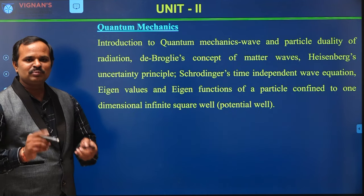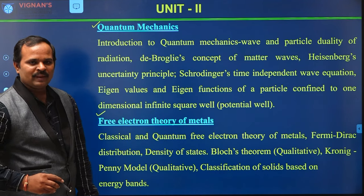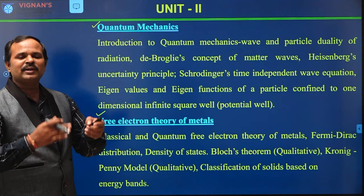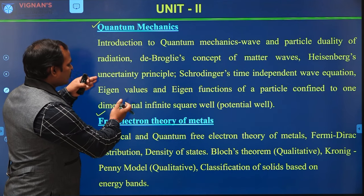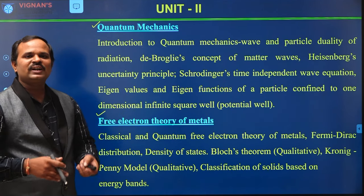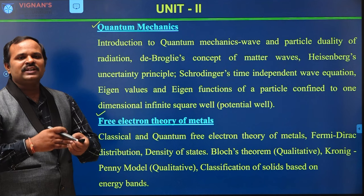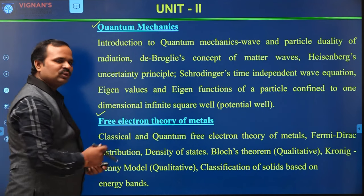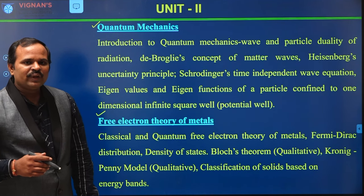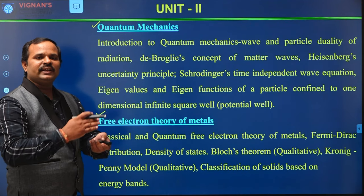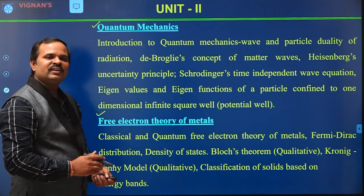The second unit comprises two parts: quantum mechanics and free electron theory of metals. In quantum mechanics, we discuss the principles of quantum mechanics, then apply these principles to the free electron theory of solids to understand properties of metals — electrical, magnetic, and optical properties. In our course, we study majorly the electrical properties of solids. We also distinguish materials based on band gap — metals, semiconductors, and insulators.